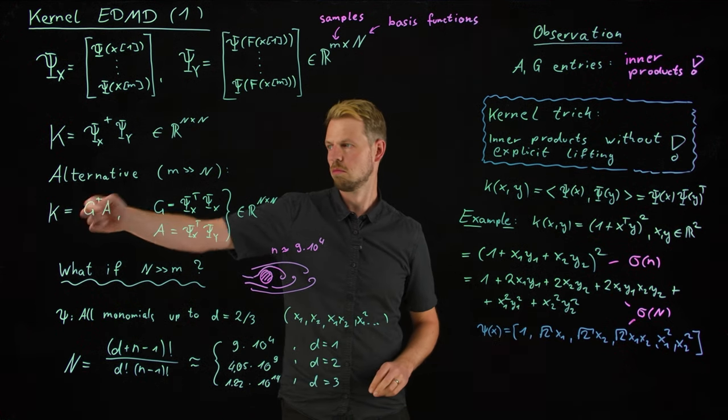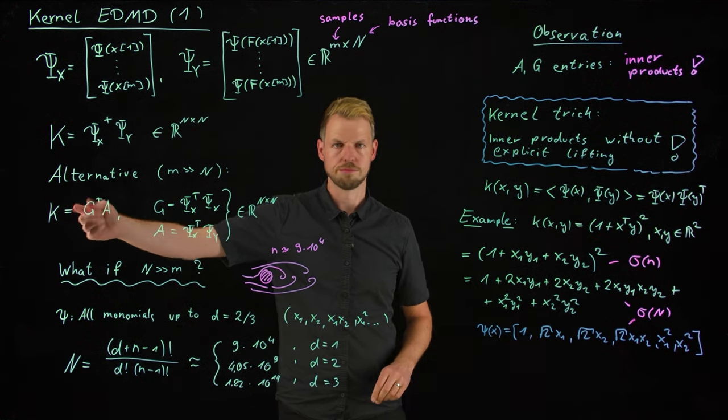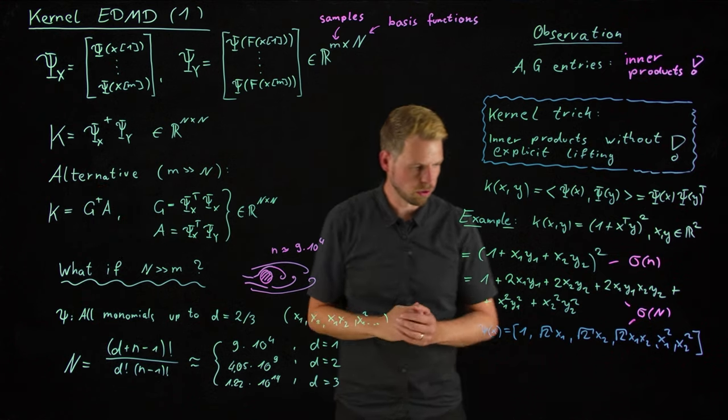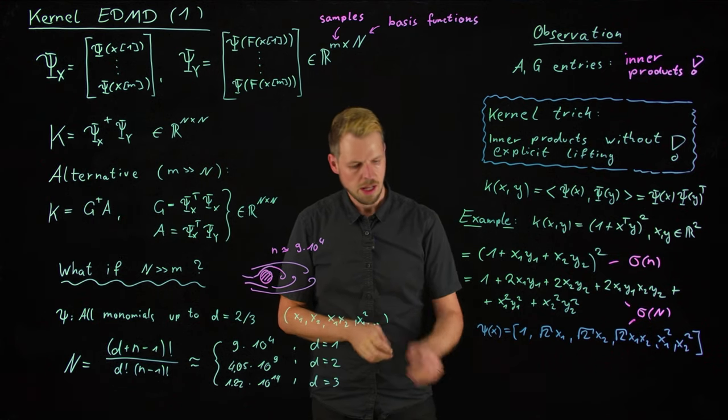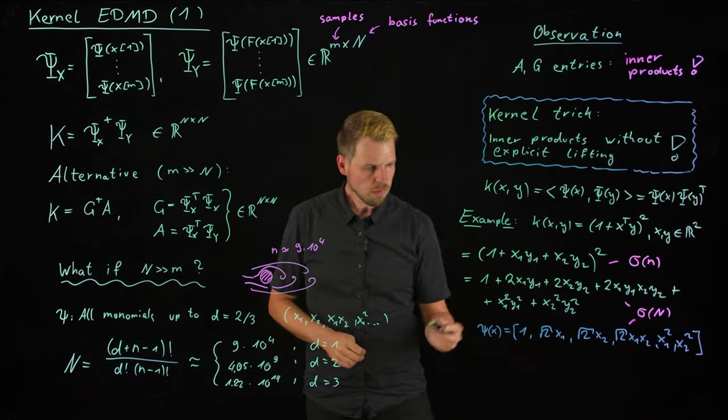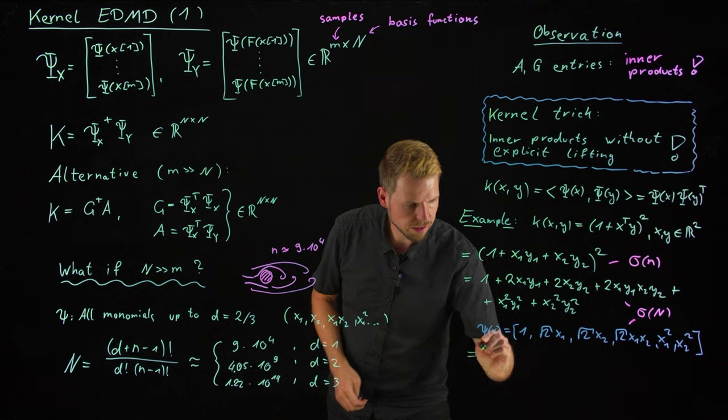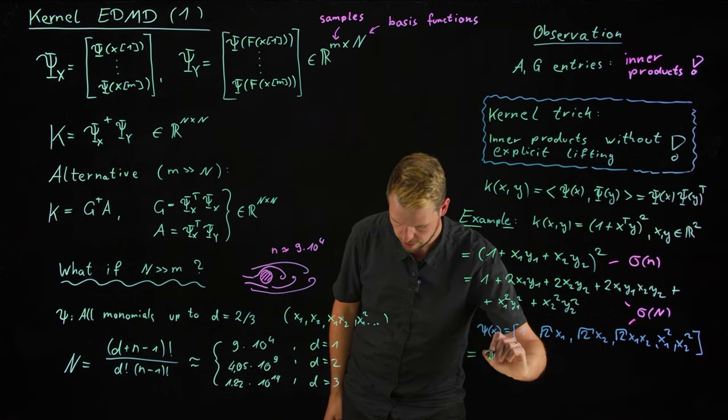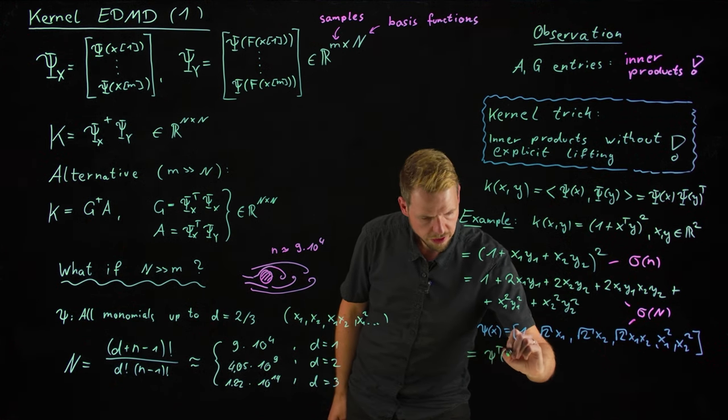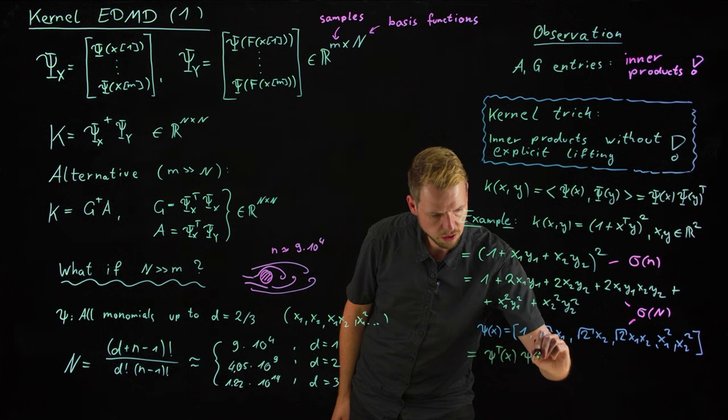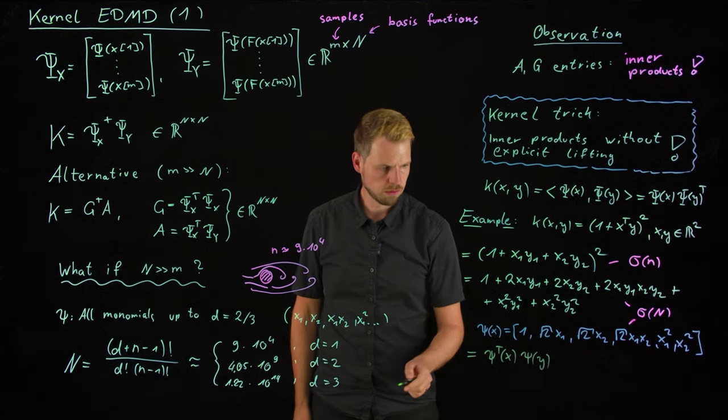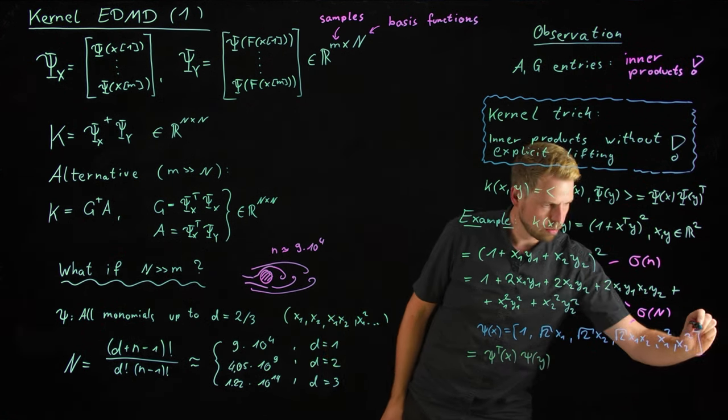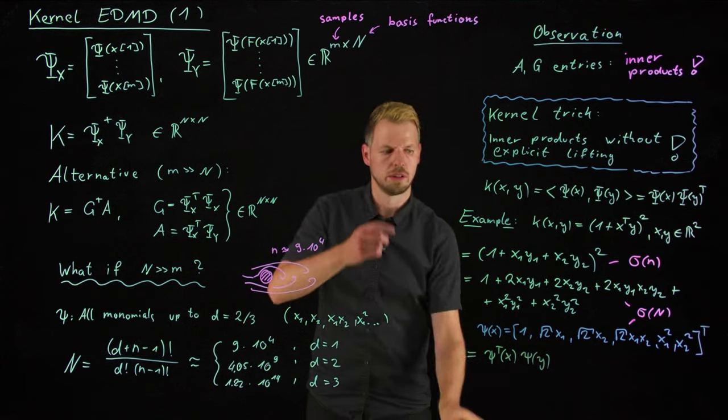But in the end, it doesn't matter, right? If I learn a Koopman operator that acts on this dictionary instead of the dictionary without the square roots of 2, this would just give me these entries, well, the square root would factor into the k in the end. And so if I do this, what I've basically done is I've computed psi transpose of x times psi of y.